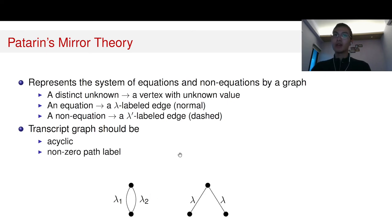The graph shouldn't contain any zero path label, because if we have this situation, then the distance between those two nodes is equal to lambda, while the distance between those two nodes is also equal to lambda. Well, those are not the same node.